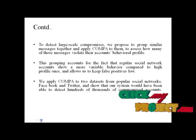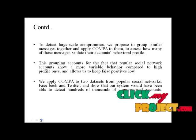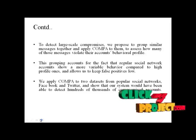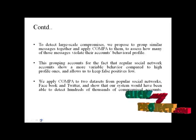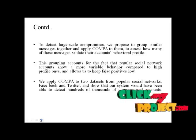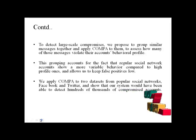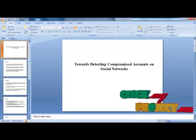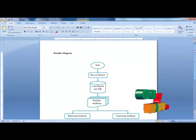This grouping accounts for the fact that regular social network accounts show more variable behavior compared to high profile ones, allowing us to keep false positives low. We apply COMPA to two datasets from popular social networks — Facebook and Twitter — and show that our system would have been able to detect hundreds of thousands of compromised accounts.